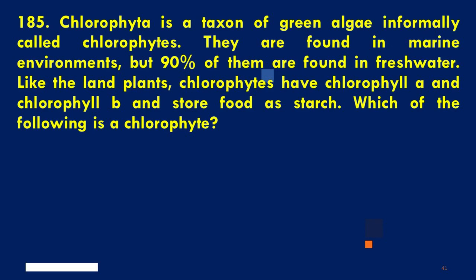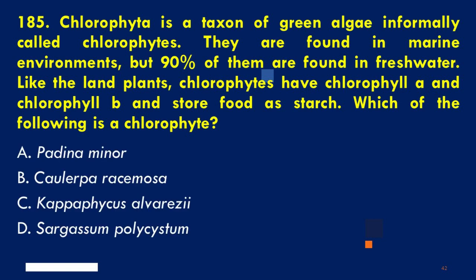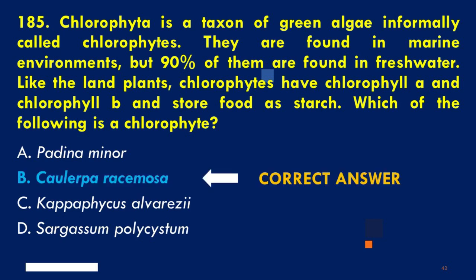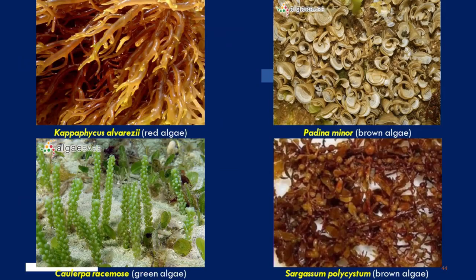Chlorophytes contain chlorophyll A and chlorophyll B, and store food as starch. Among the choices, Chlorella is a chlorophyte or green alga. Sargassum polycystum is an ochrophyte or brown alga, and Kappaphycus alvarezii is a rhodophyte or red alga.